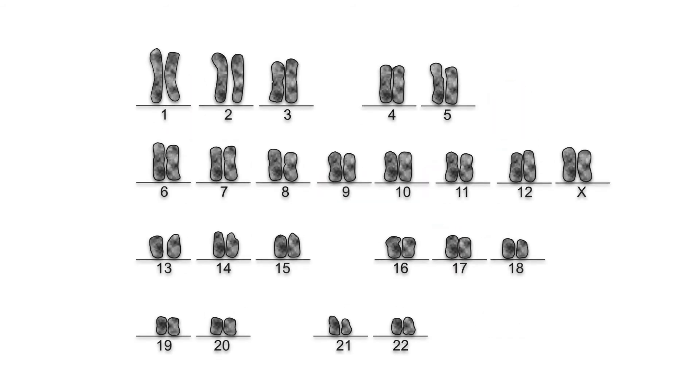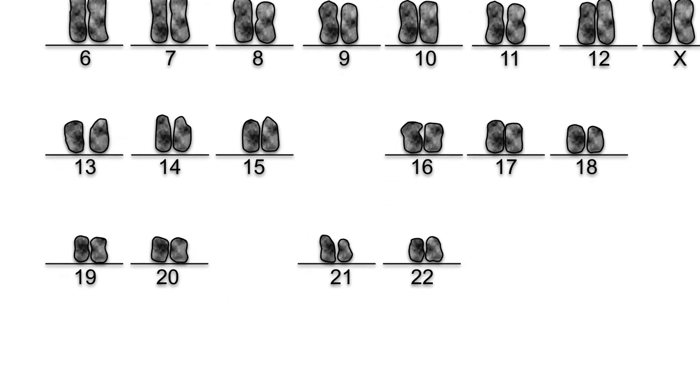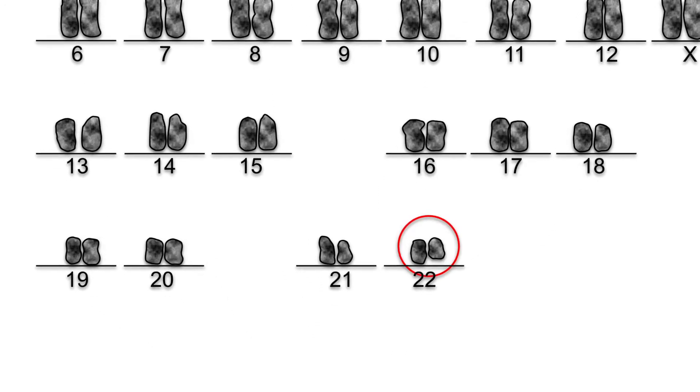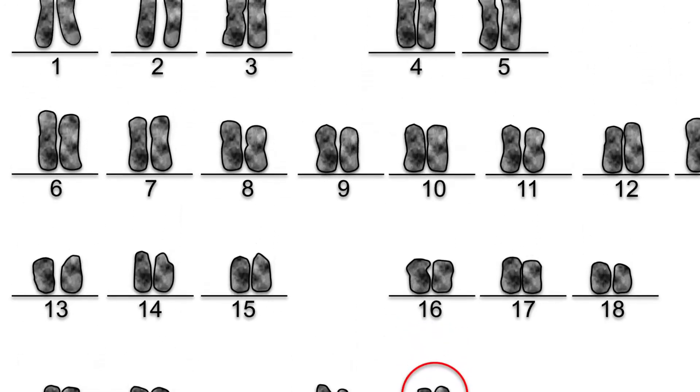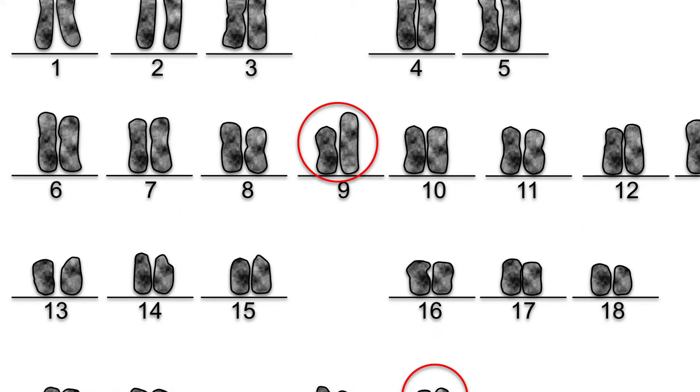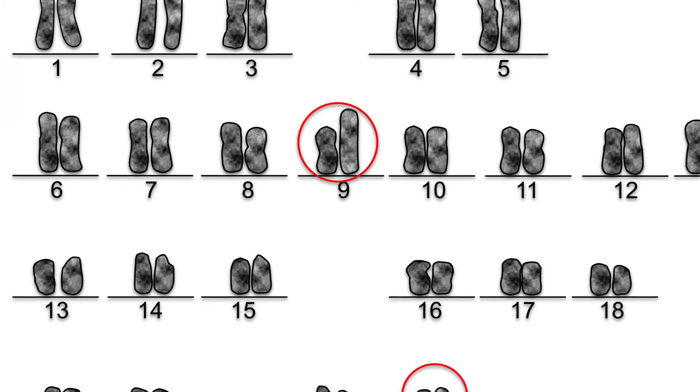In 1960, cancer researchers Peter Noel and David Hungerford were analyzing karyograms at a Philadelphia hospital when they detected an abnormally small chromosome 22 and a large chromosome 9 in blood cells from patients with chronic myeloid leukemia, CML.